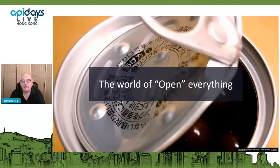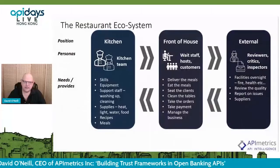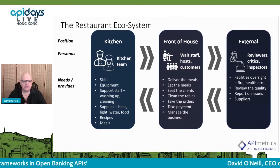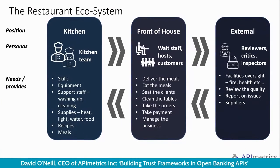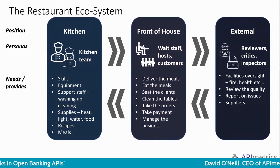It's in everybody's interest to understand what is being delivered and how. I'm going to talk about the API ecosystem in terms of being a restaurant and draw some comparisons. In a restaurant ecosystem, you have three distinct areas of interest. You have the kitchen, with equipment, support staff, dishwashers, food suppliers, chefs, recipes, meals — things coming in and out of the kitchen.